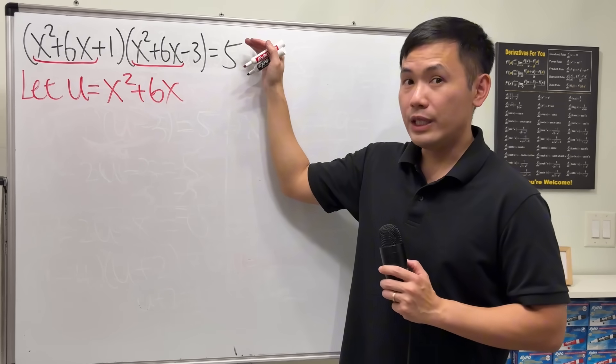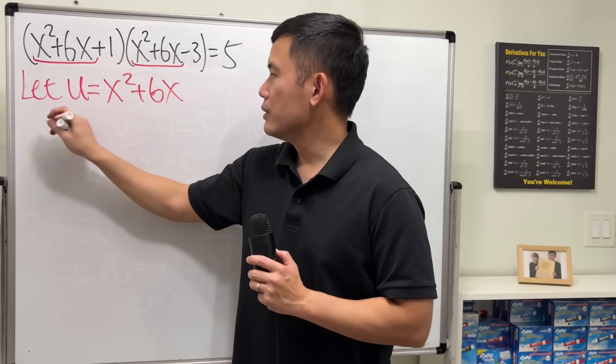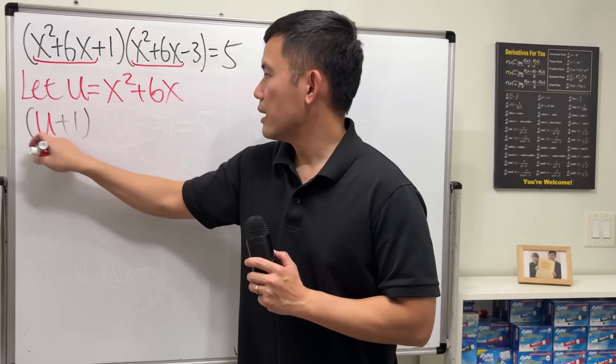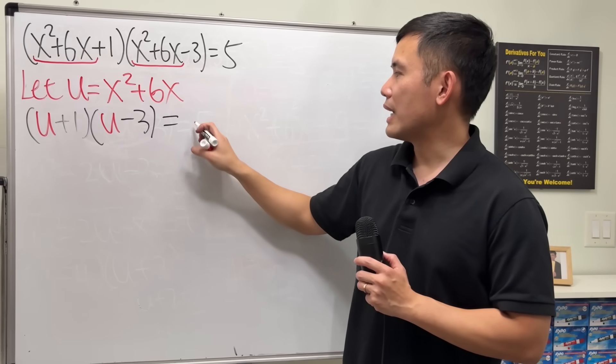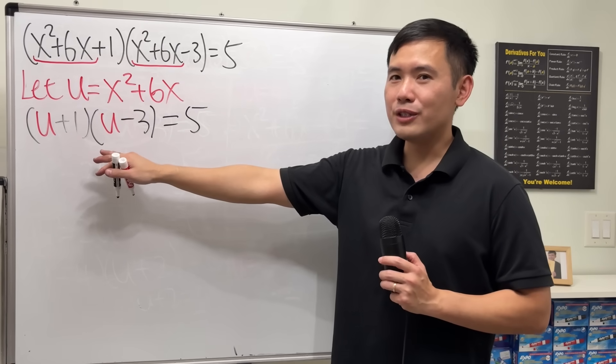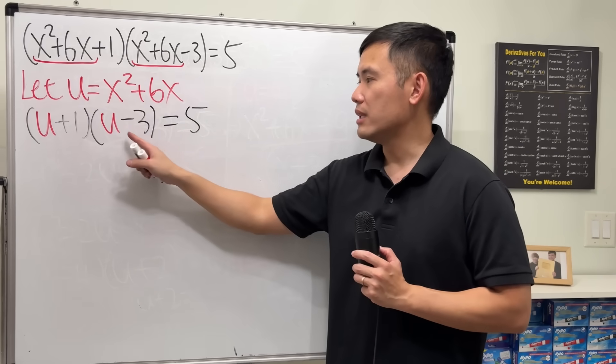So, now we can take this equation to the u world. This is the u, so we can write u plus 1 times, this is the u, minus 3, and that is equal to 5. Now, this is a much better equation, and in fact, it's going to be a quadratic equation in terms of u.